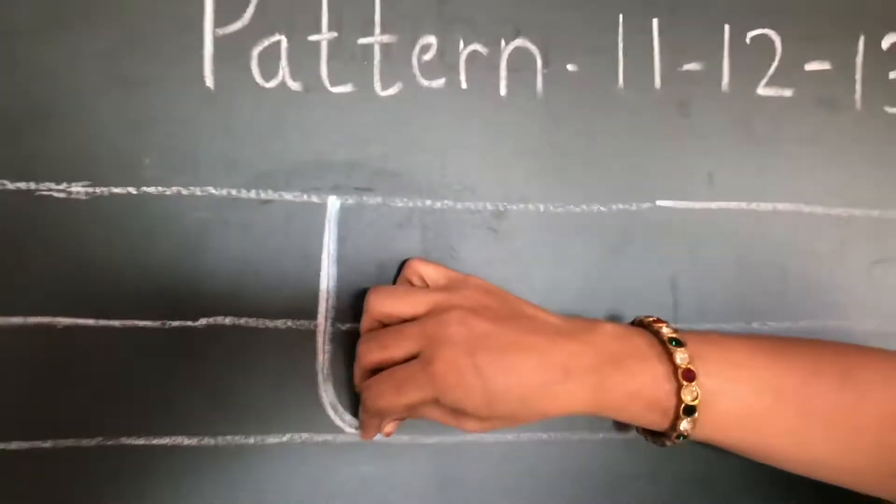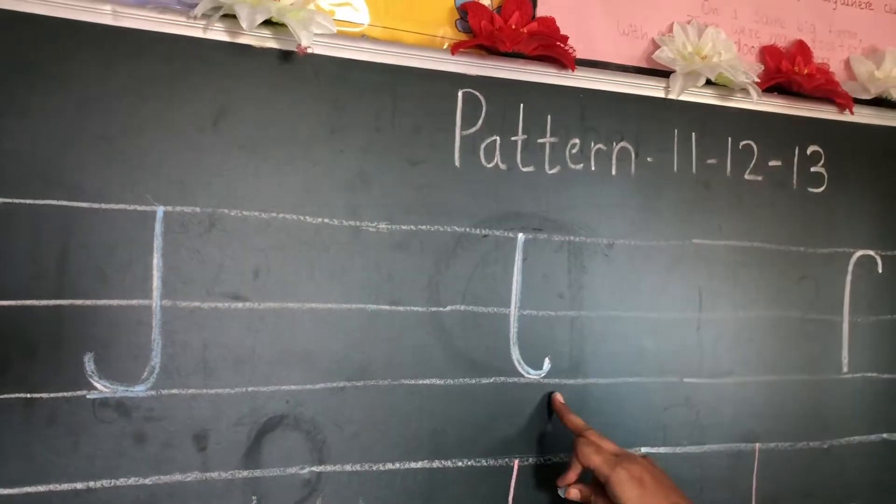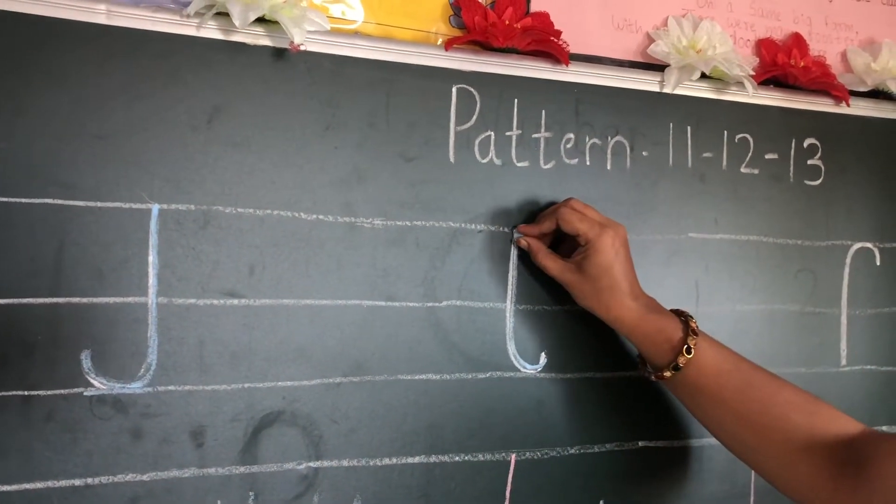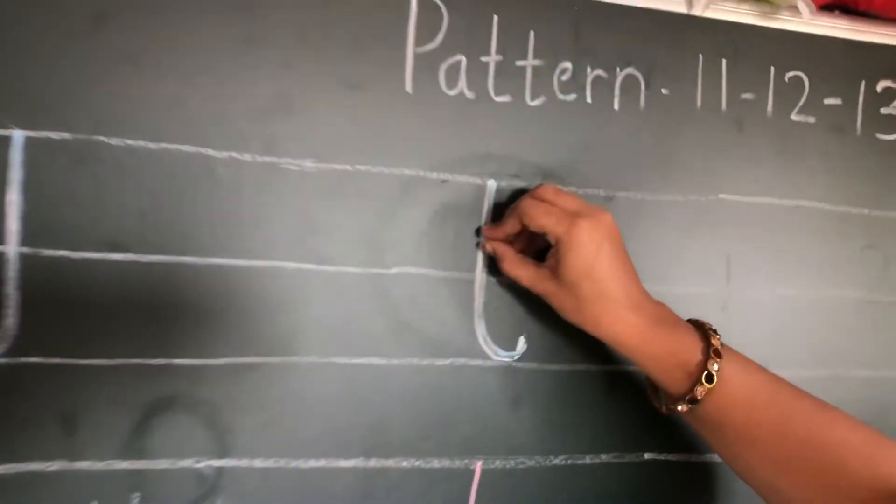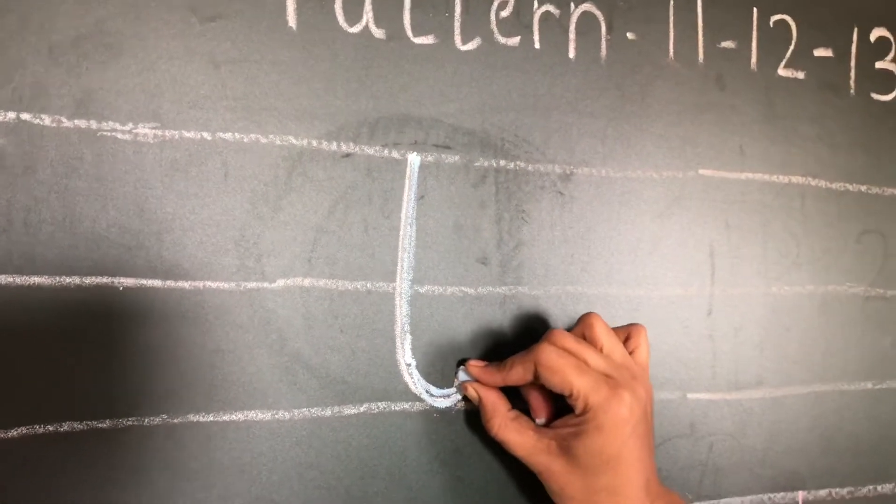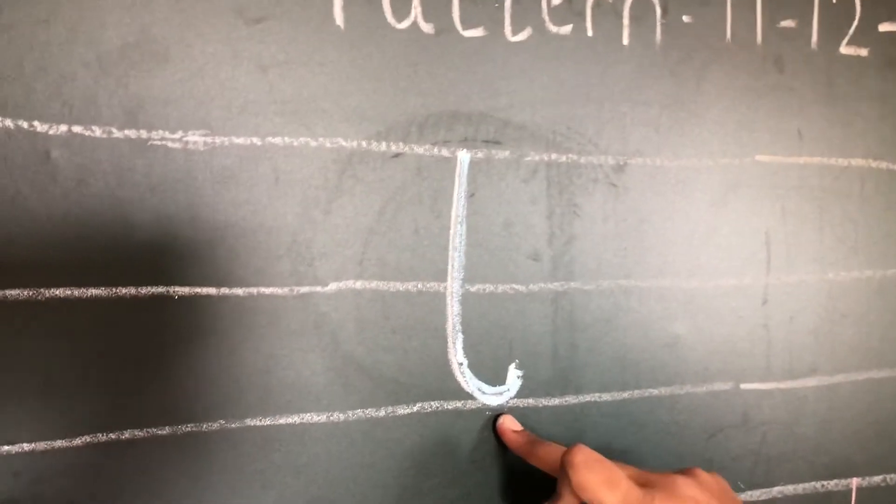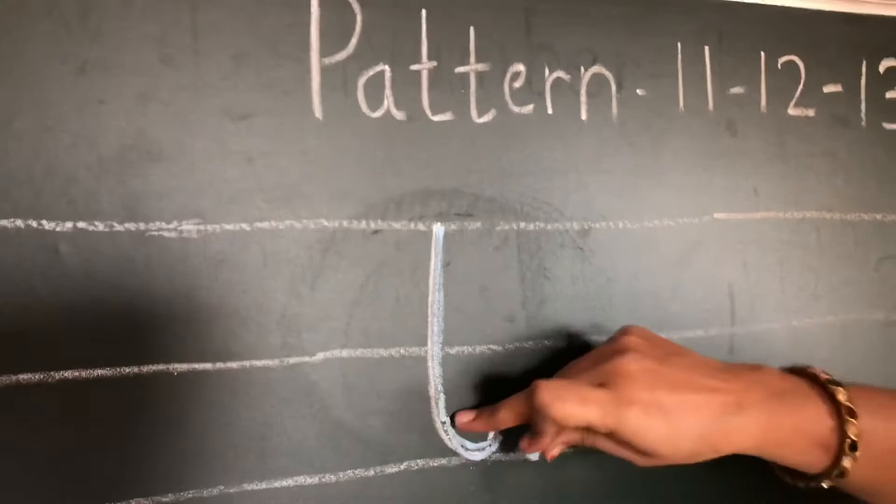Now see, this is what? If you see, this is the opposite of this. I will repeat. See, it is coming down, down, and it is turning this side. In this also, you have to touch the line properly. Then only your letters will look proper.